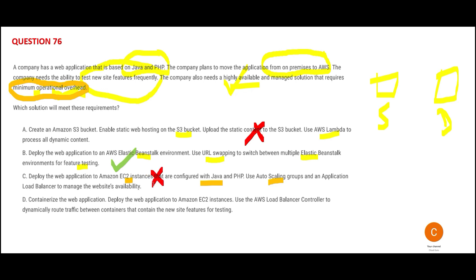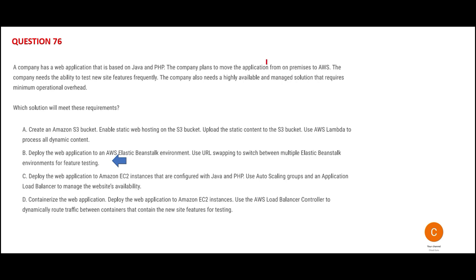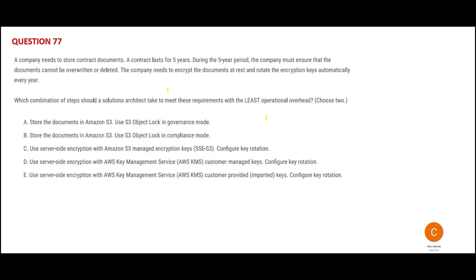Same problem with Option D. Option D says containerize the web application — that's fine. But then it uses an EC2 instance underneath, which means there's no managed service helping you. The client still has to manage it themselves, which increases operational overhead rather than decreasing it. So Option D won't work either. Option B is the final answer.